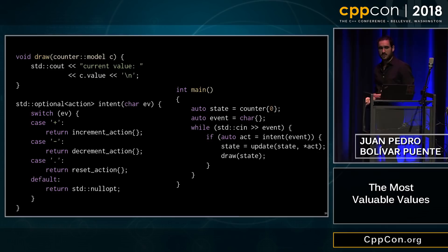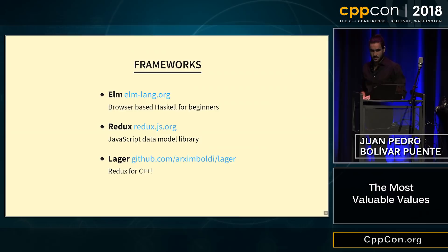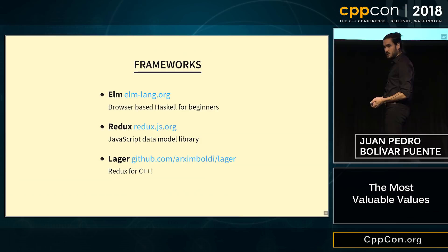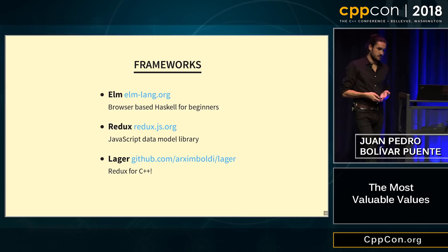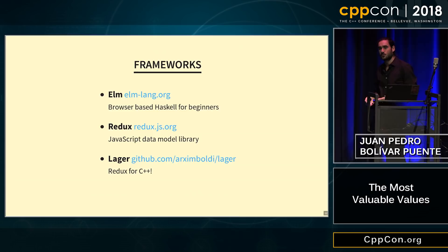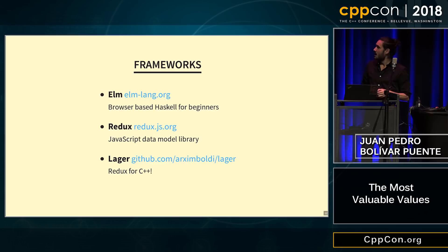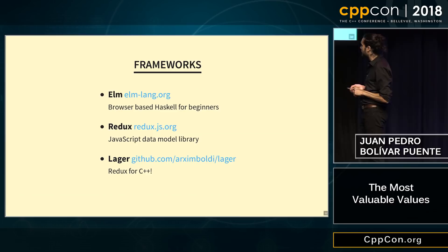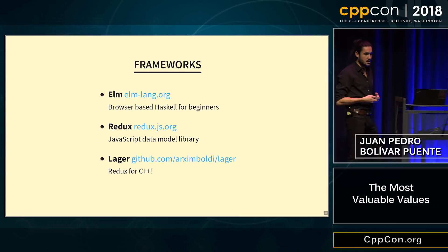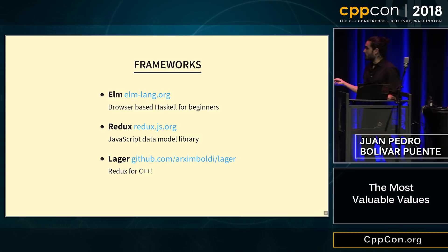This architecture — as I said, I didn't invent it myself — has many frameworks that help you implement it in concrete software. It's very exercised in the web world. We have Elm, which is a language like a simplified Haskell designed to write interactive software using this architecture. We have Redux, a data model library you can use to implement this architecture. And I wrote one that is very small and simple — it's Redux for C++, called Lager. Here's the GitHub page — I'll put the link at the end again.